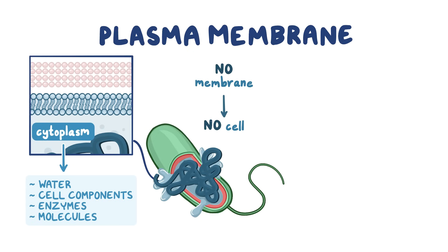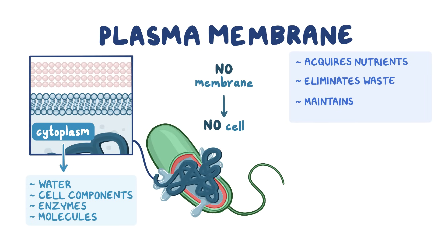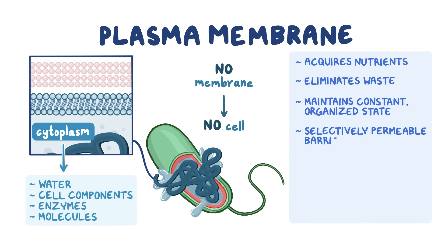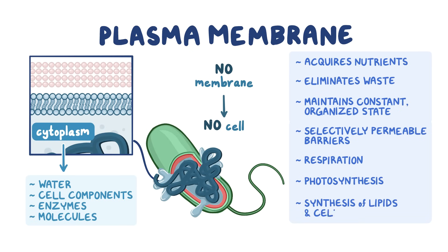The plasma membrane is responsible for most of the cell's relationship with the outside world, by acquiring nutrients and eliminating waste, and also maintains the interior of the bacteria in a constant, highly organized state. All plasma membranes are selectively permeable barriers, which allow certain ions and molecules to pass in and out of the cell while preventing the movement of others. However, in bacteria, the plasma membrane has other important roles, such as respiration, photosynthesis, and the synthesis of lipids and cell wall components.